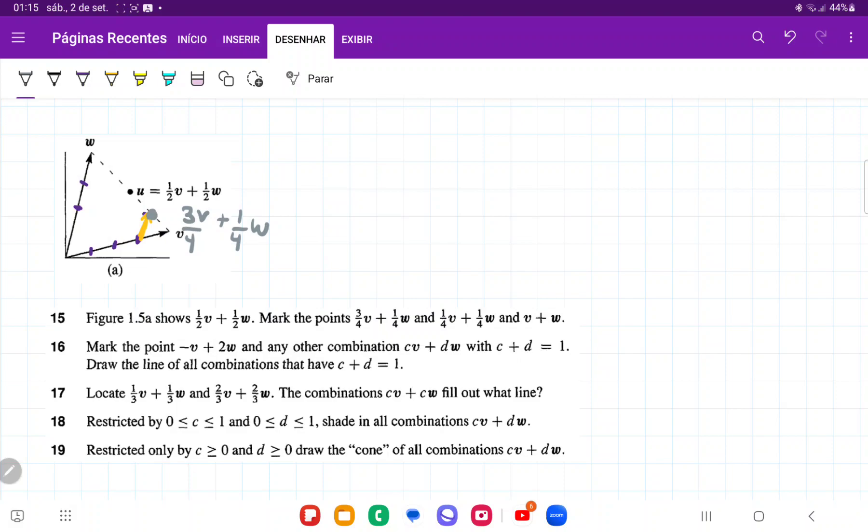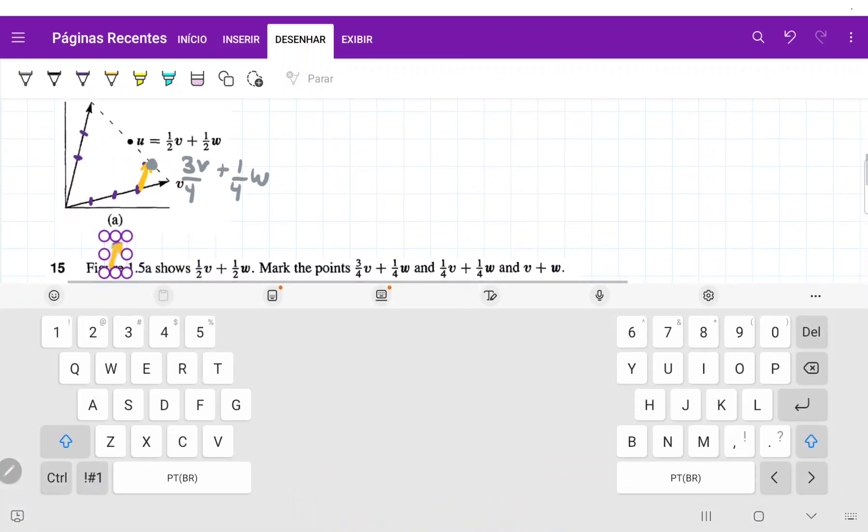Now they want us to do 1 quarter w plus 1 quarter v. So once more, I'm going to take 1 quarter w and place it at 1 quarter v. So that's going to be the length of 1 quarter w. And then I'm going to move it.